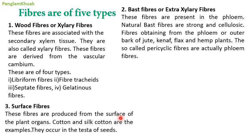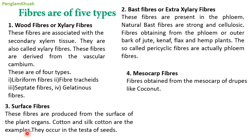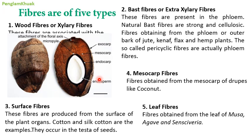Number three is surface fiber — produced from the surface of the plant's organ, mostly including cotton and sisal. Cotton fibers occur on the testa or outer surface of the leaf. Number four is mesocarp fiber — fiber obtained from the mesocarp of drupes like coconut. The coconut has an exocarp, mesocarp, and endocarp covering the endosperm; fibers obtained from the mesocarp are called mesocarp fibers.